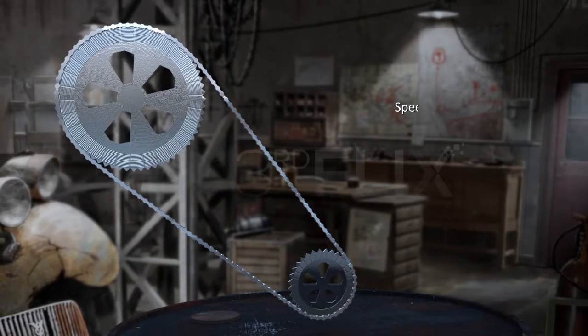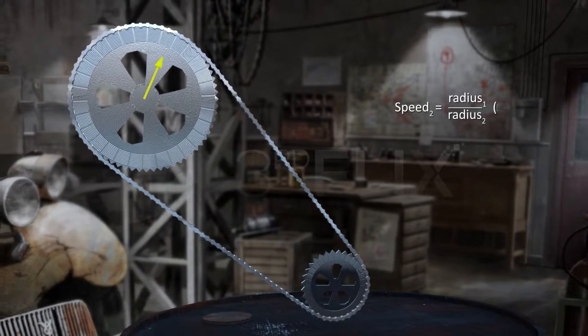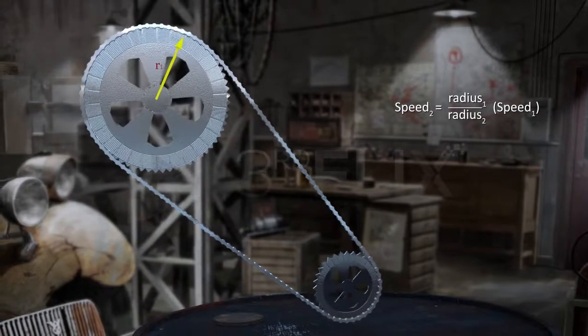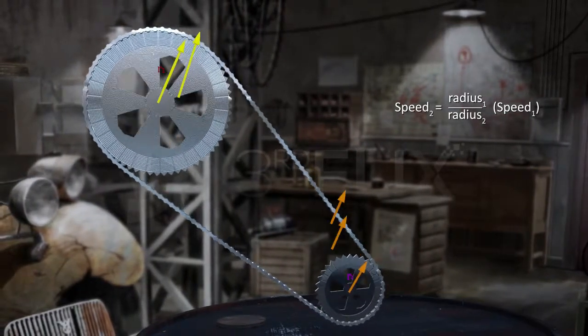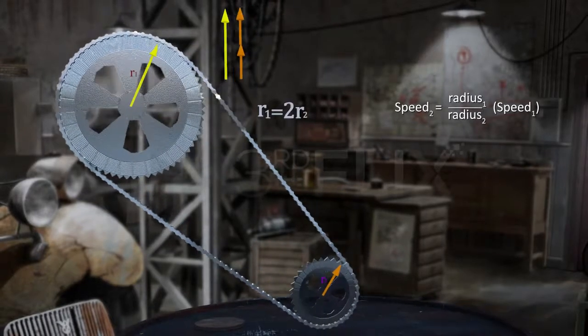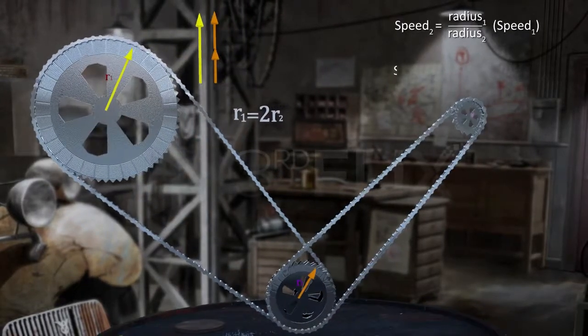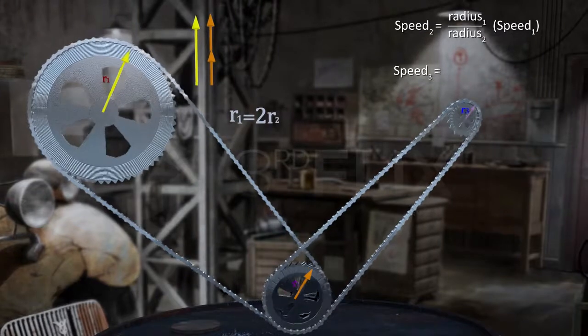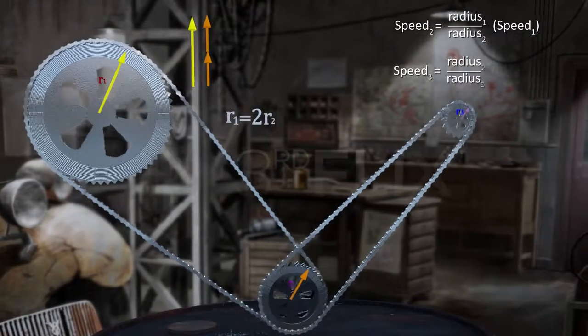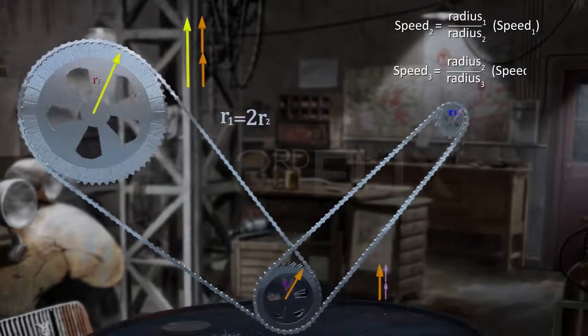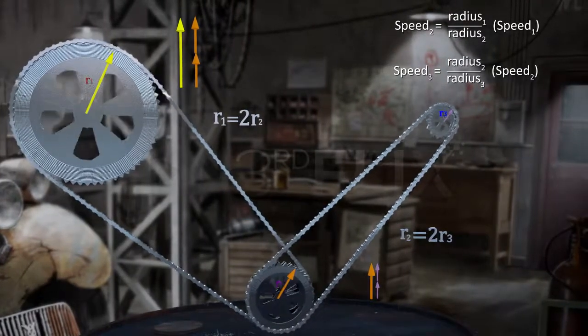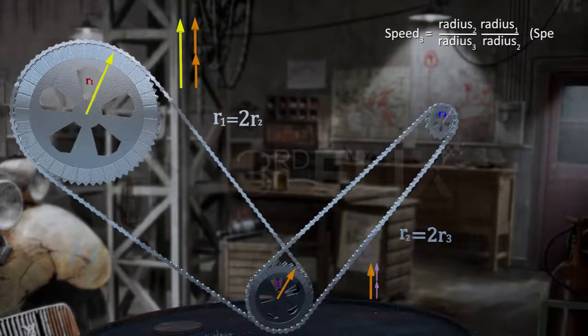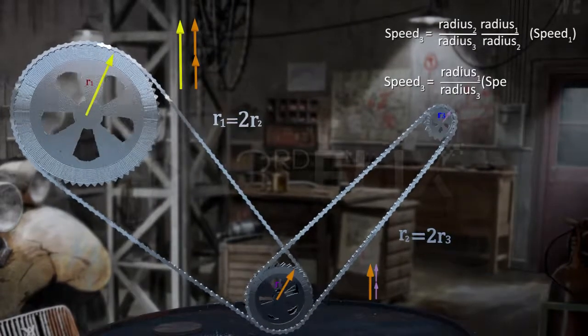So, if the radius of gear 1 is twice as big as the radius of gear 2, then gear 2 spins twice as fast as gear 1. Similarly, if gear 2 is twice as big as gear 3, then gear 3 turns twice as fast as gear 2, and the speed of gear 3 is 4 times the speed of gear 1.